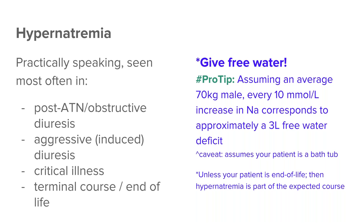There are ways to calculate the free water deficit in any given patient. The rule of thumb is that for a 70 kg male, every 10 millimole per liter increase in sodium corresponds to approximately a 3-liter free water deficit. This assumes they don't make urine and nothing else is happening — but it does tell you that the patient probably has to ingest quite a bit of extra free water on top of everything else to get back down to a more normal sodium.